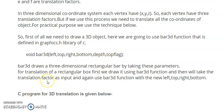Bar 3D draws a three-dimensional rectangular bar by taking these parameters. For translation of the rectangular box first we draw it using bar 3D function, and then we take the translation factor as input and again use bar 3D function with the new coordinates, that is new left, top, right, and bottom.